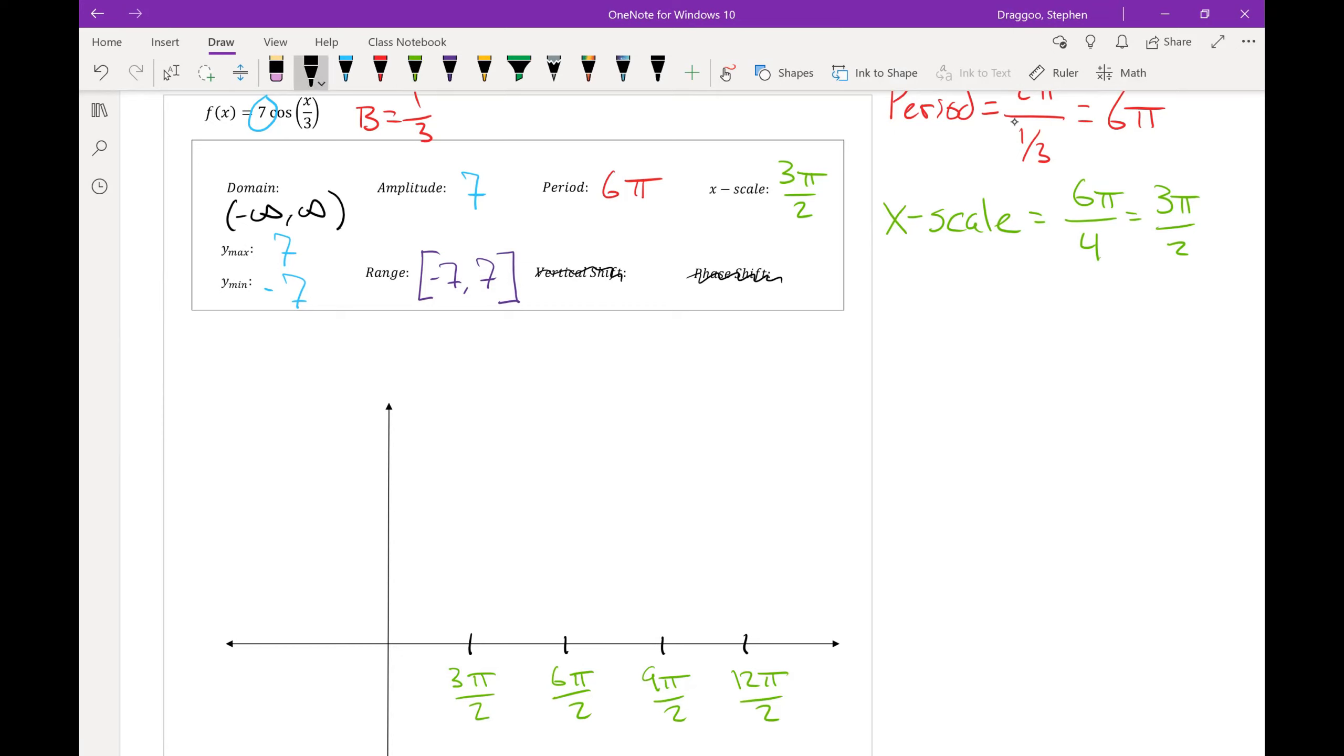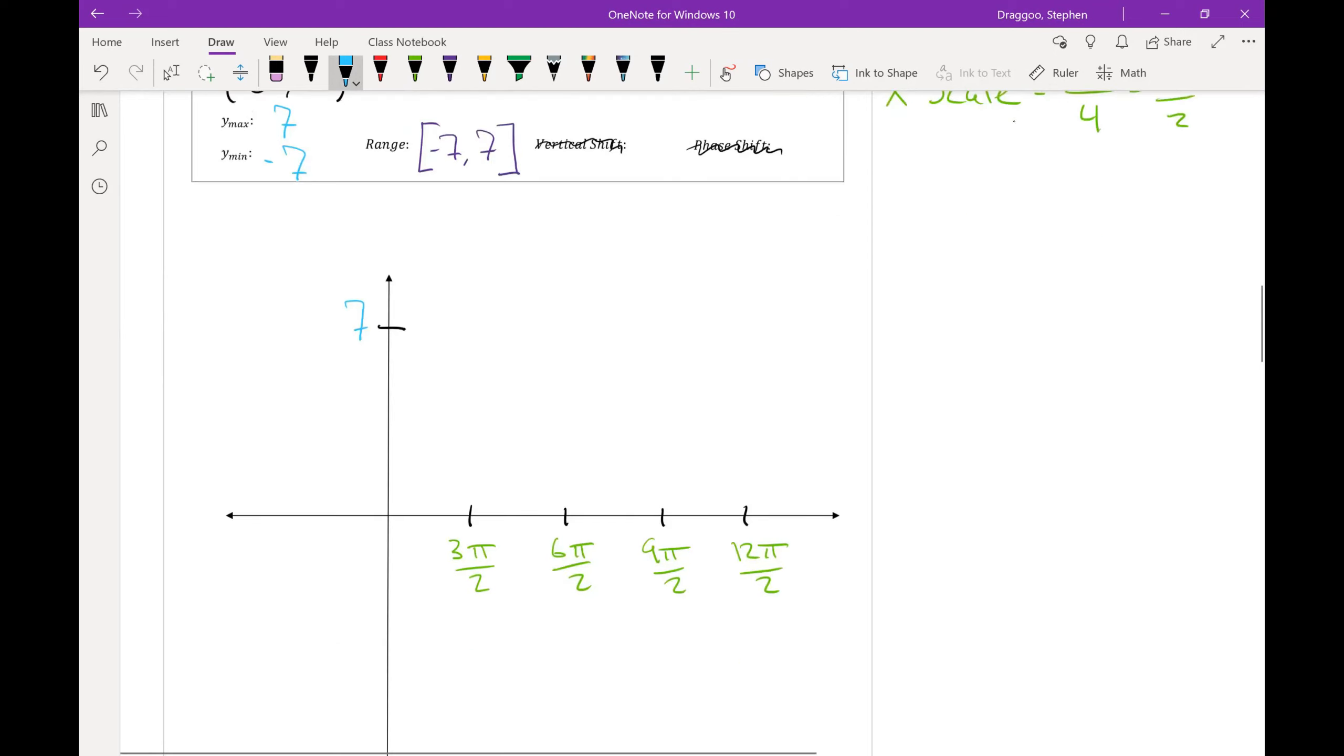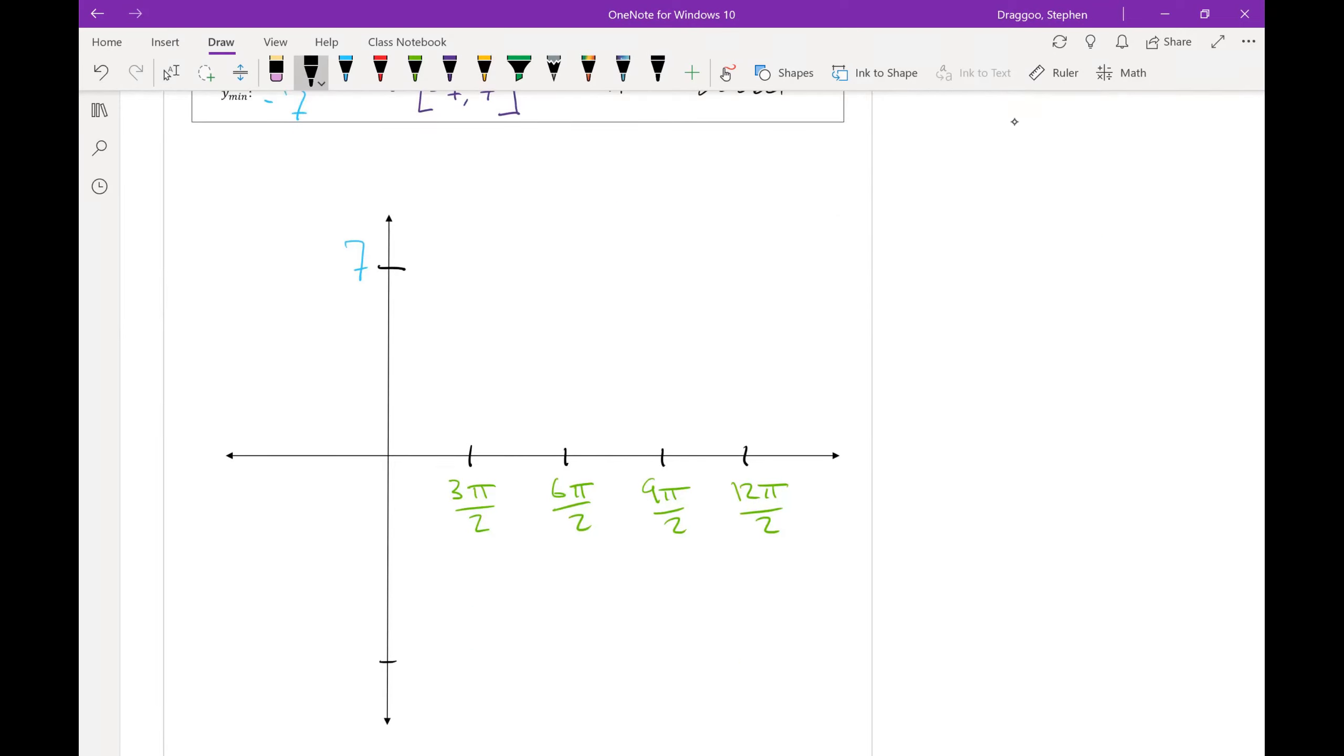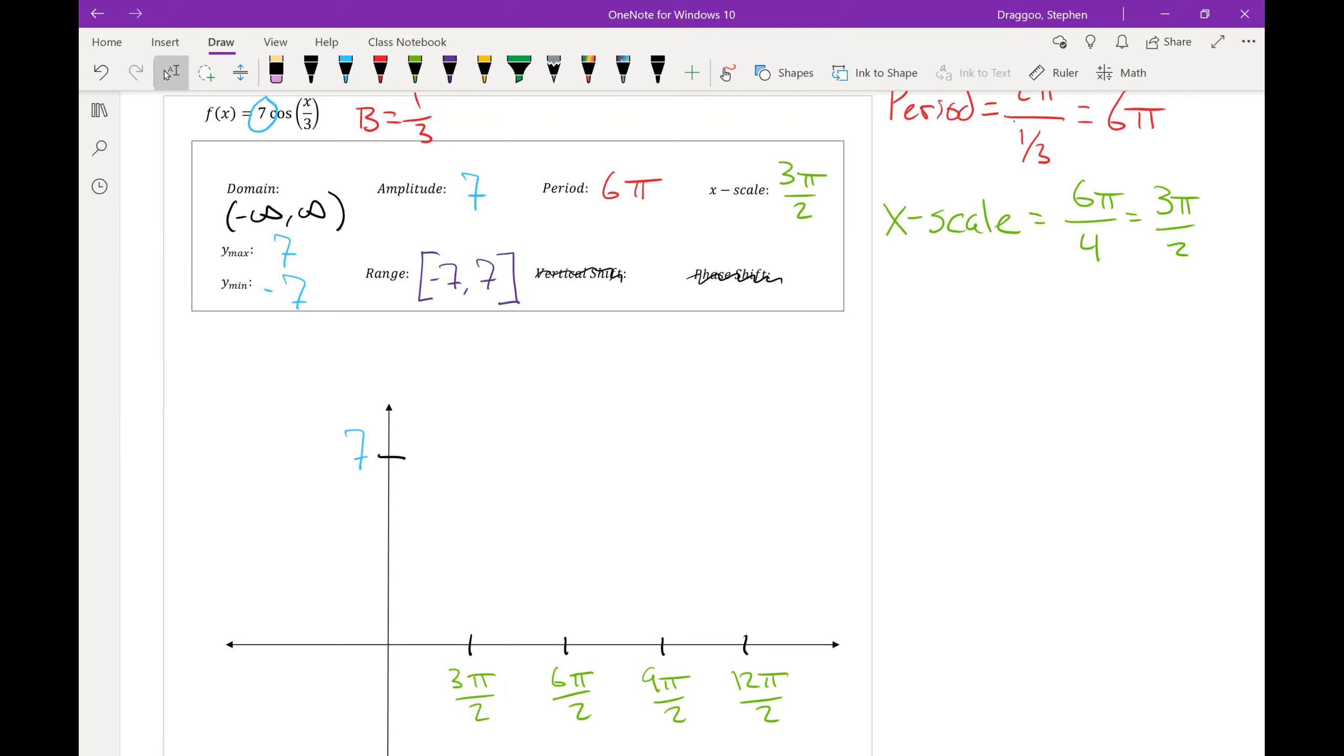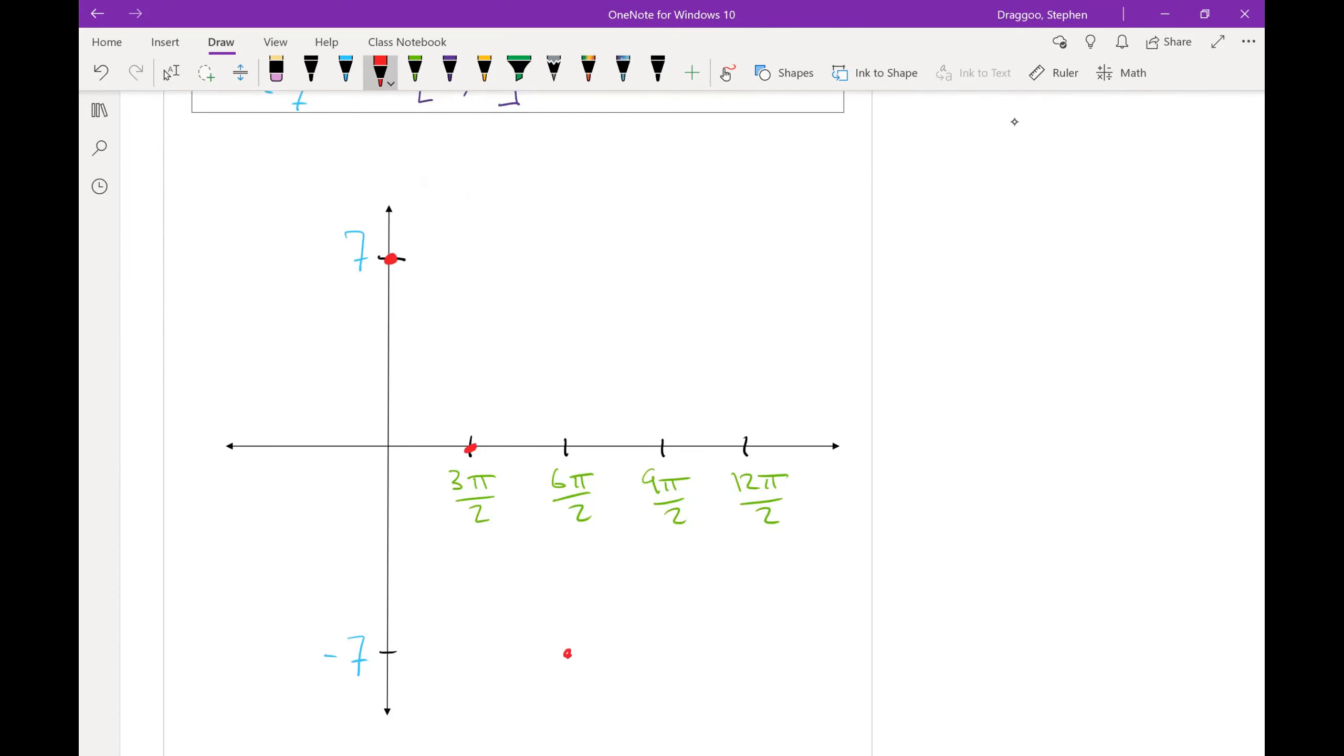I should then label my y scale, where I need to go to seven on the positive side and negative seven on the negative side, and then plot my five key points. Since this is a graph of cosine, seven cosine of x over three, my graph should start at its maximum value. So again, positive cosine should start up at the maximum value. And then it will go to the middle line, from the middle down to its minimum value, back to the middle, and up to its maximum.